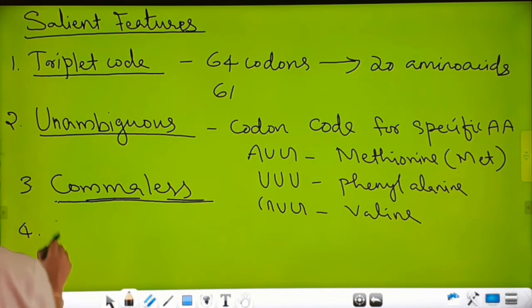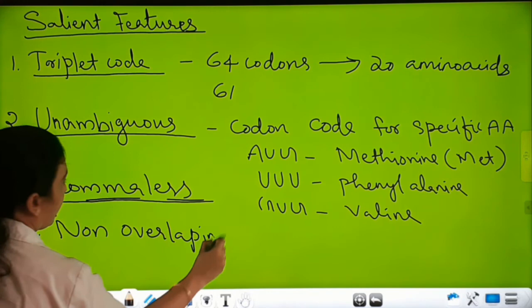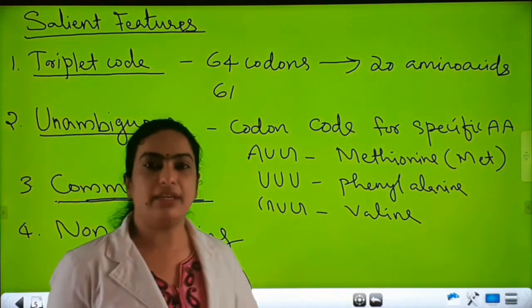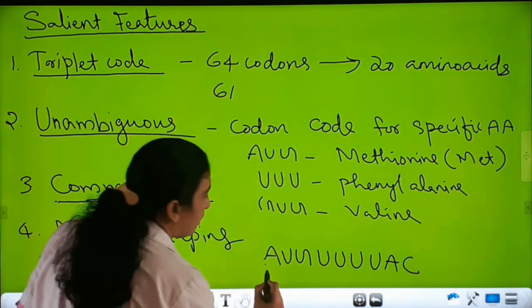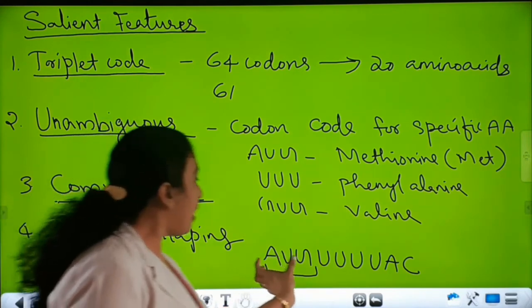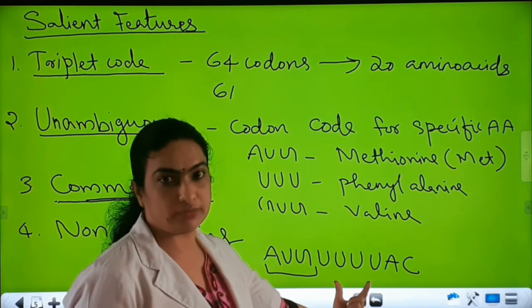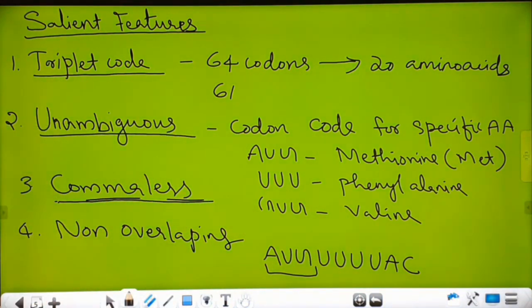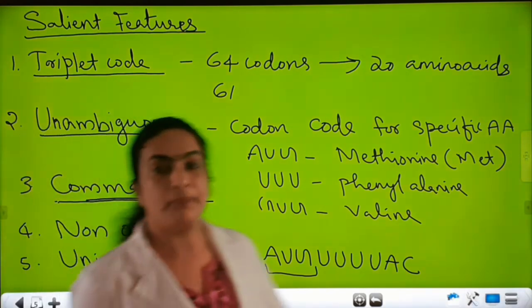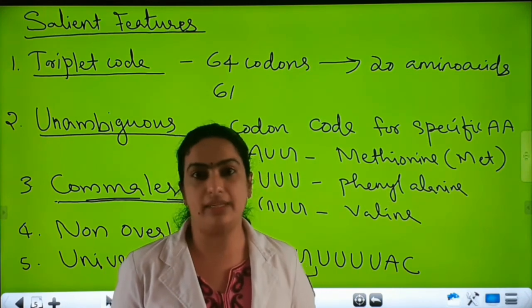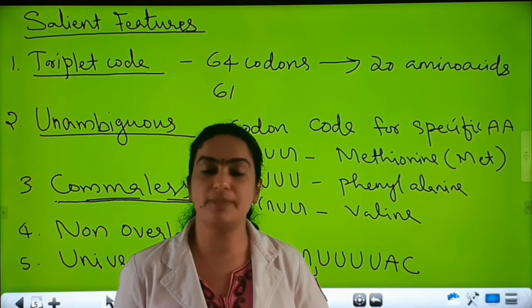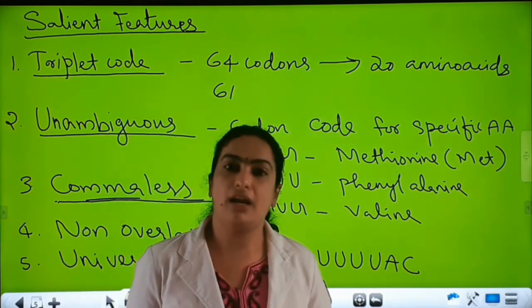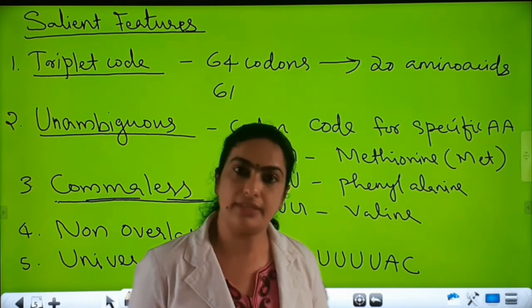The fourth feature is non-overlapping. In this continuous sequence, there is no overlapping — a codon consists of three nitrogen bases, and a part of one codon never forms part of the next codon. That is called the non-overlapping feature. The fifth feature is universal — the genetic code is the same in all living things, from primitive organisms like bacteria to advanced organisms like human beings.